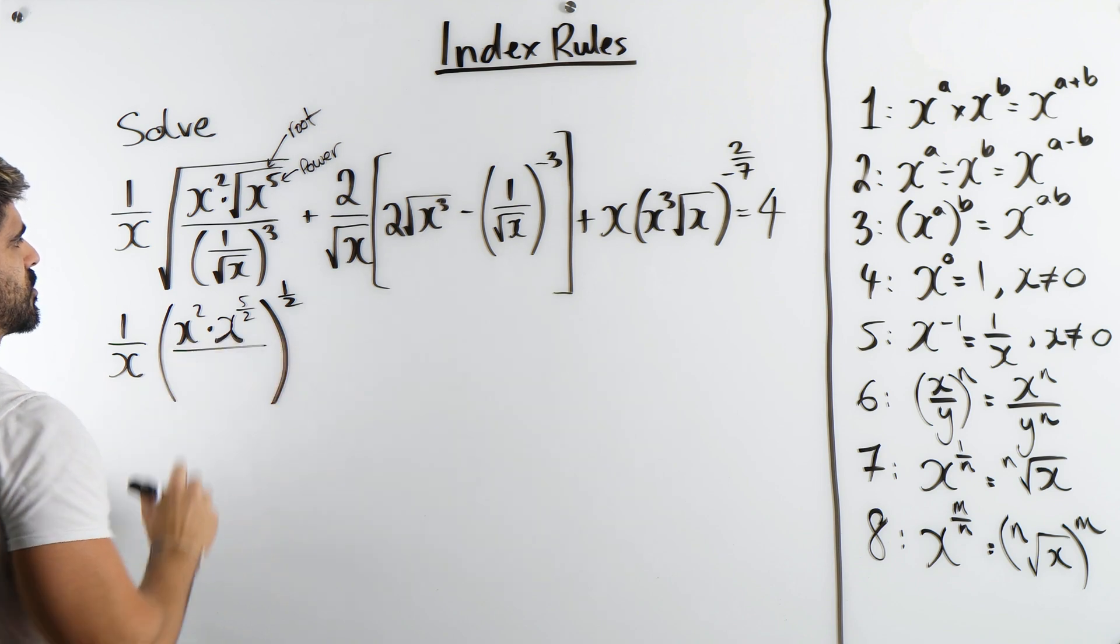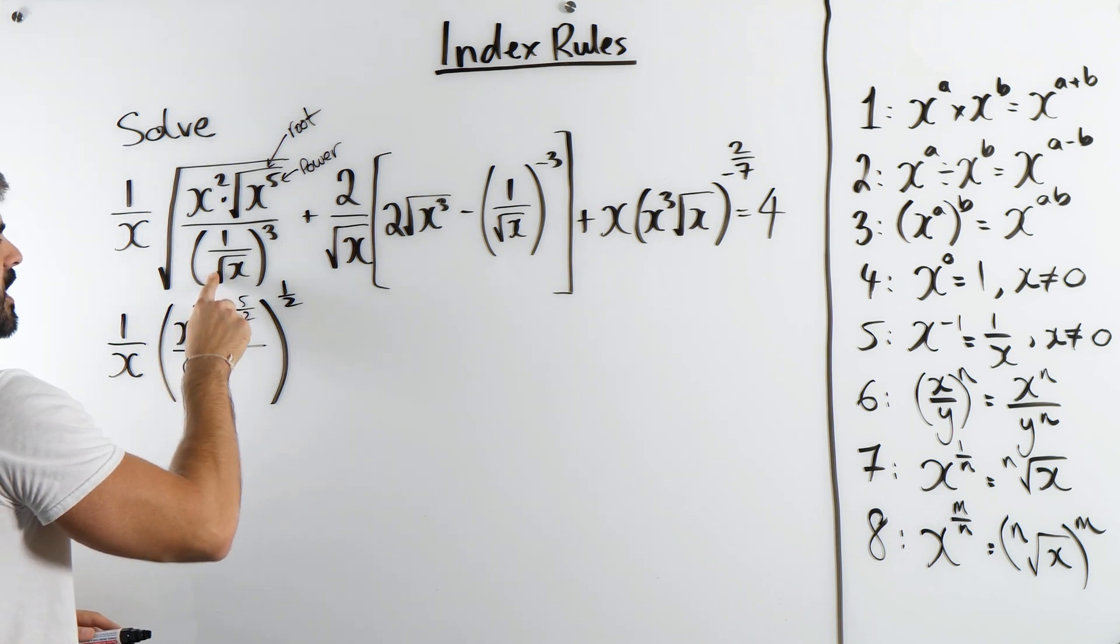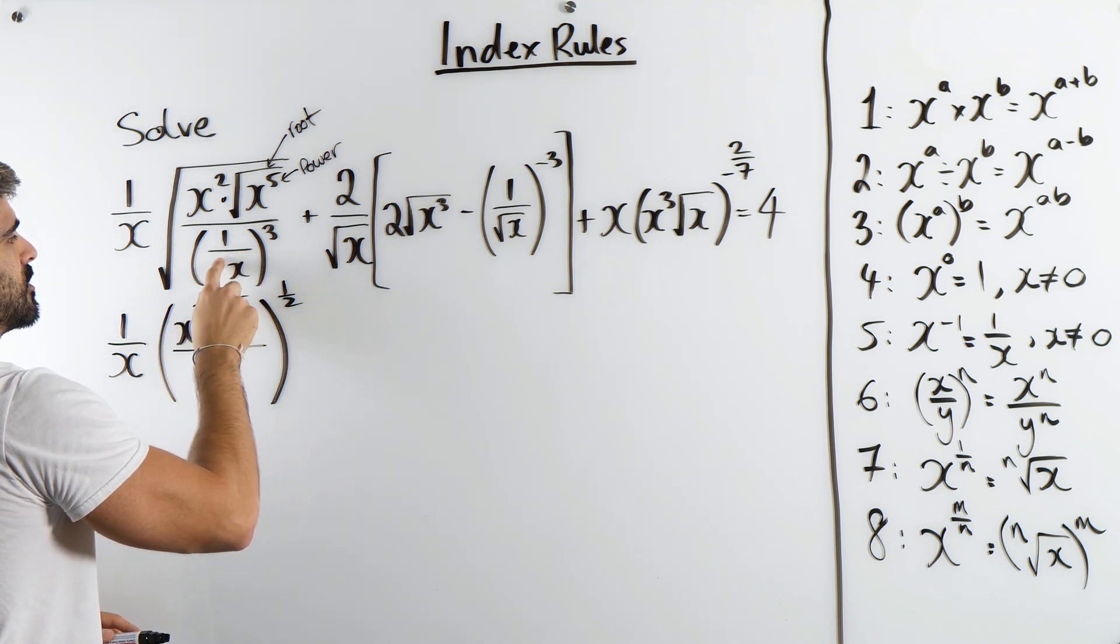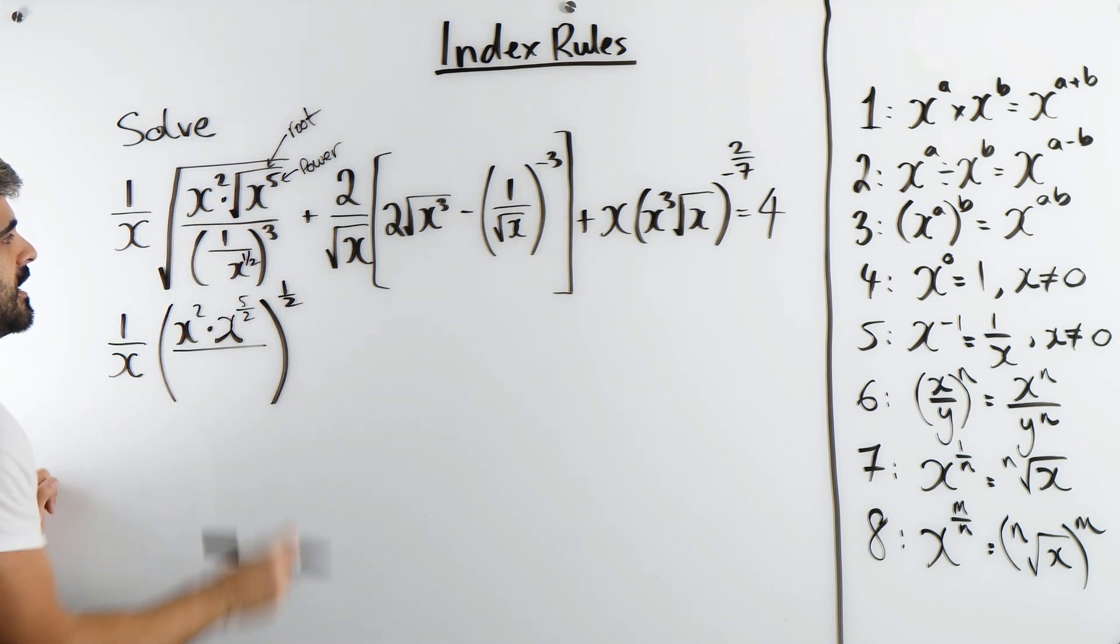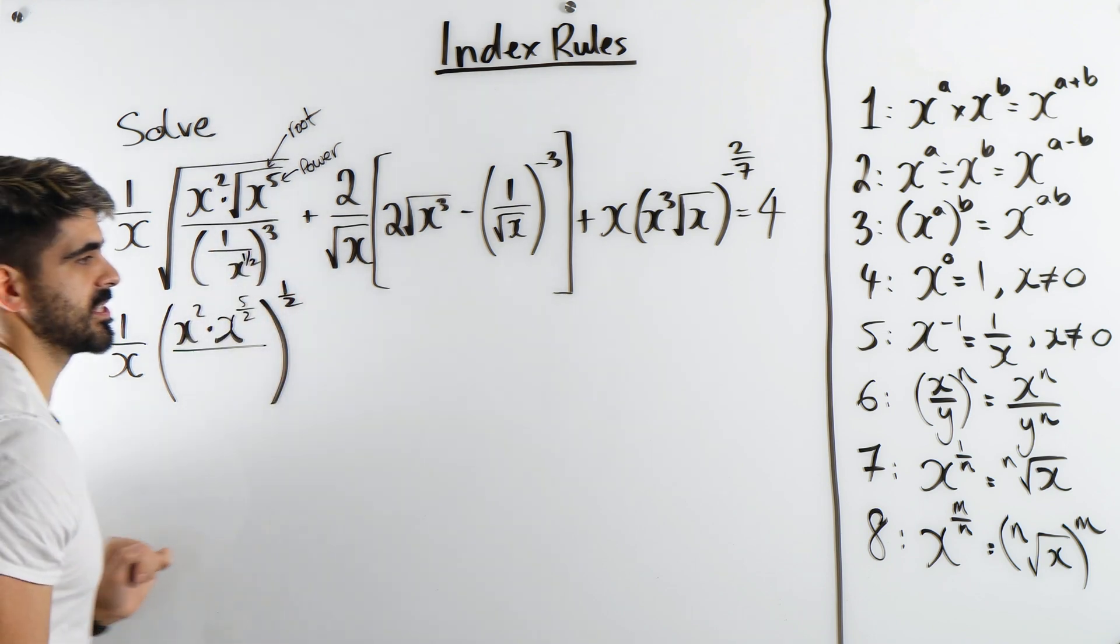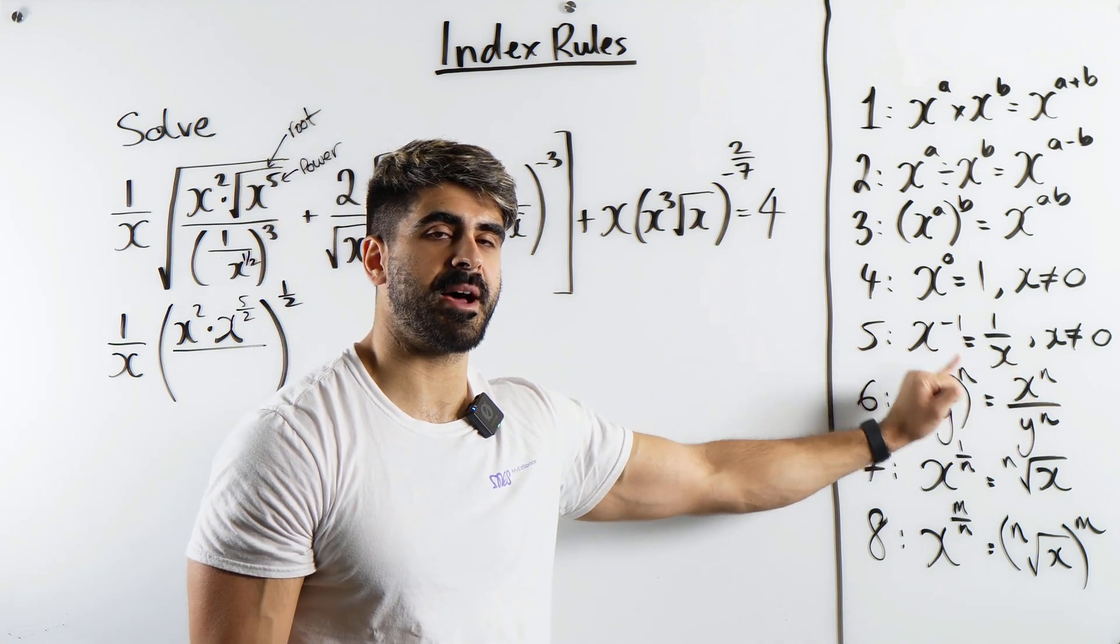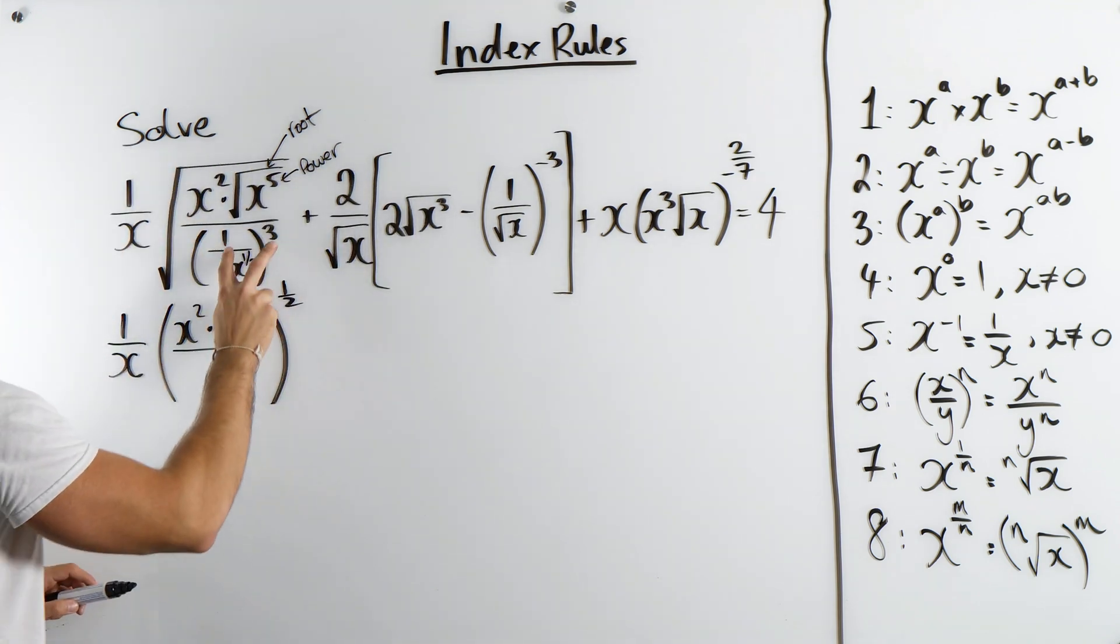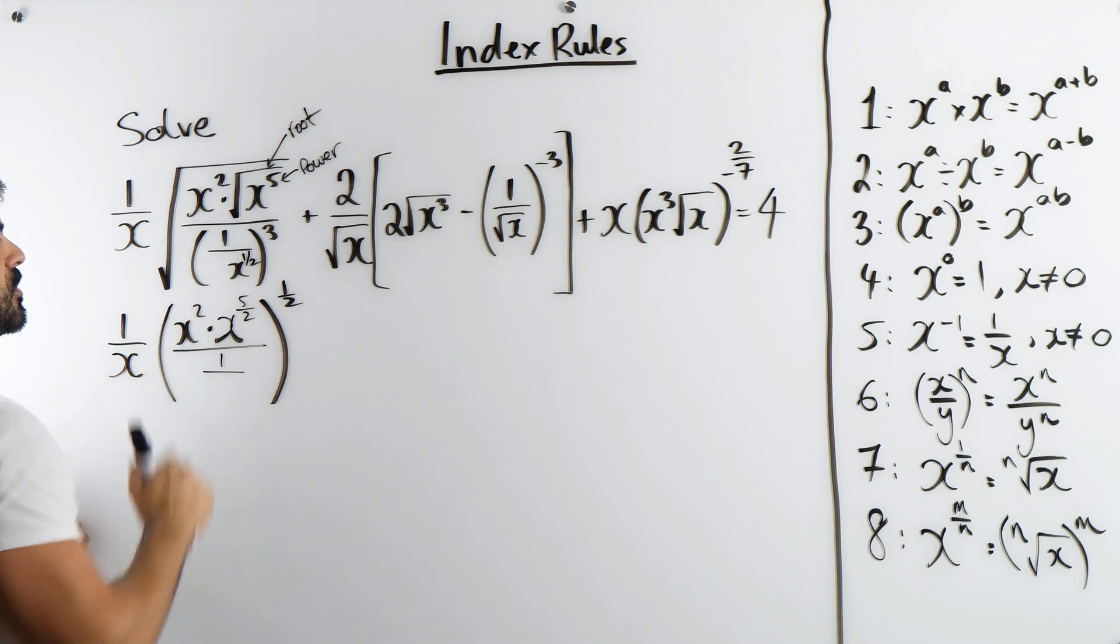Now in the denominator, this one's quite interesting because we have 1 over root x and then we have cubed. Now what does root mean? It means power 1 half. I'm actually just going to do that here. Because we're going to be writing a whole new line for everything. Then we are cubing it. Now we discussed this in the last video as rule 6. You have a fraction raised to a power. We distribute that power to the numerator and denominator. So we're going to be cubing the numerator which is 1. 1 cubed is just 1. Divided by x to the power of a half cubed.